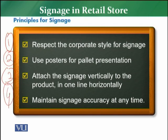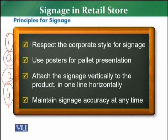The fourth and very important principle for signage is that you need to maintain signage accuracy at all times. You need to ensure there is no spelling mistake, no product information mistake, no pricing mistake, or any other mistake — the accuracy of signage has to be maintained. If a retailer follows these principles properly, the objectives set will be achieved. If the principles of compliance are not followed, ultimately the retailer will not achieve their objectives and will face failure.